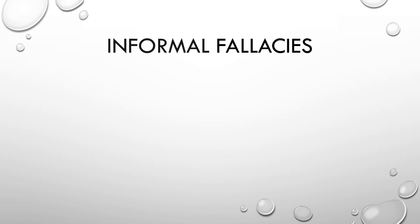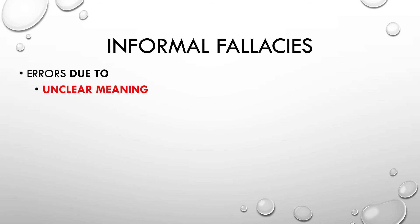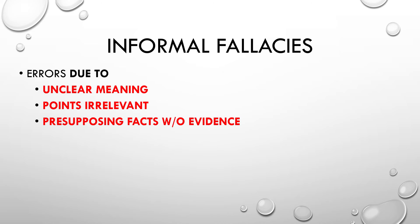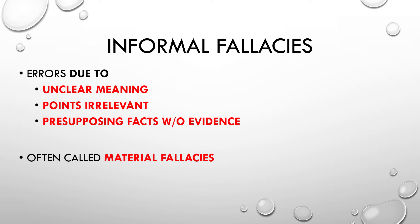What we're going to look at now is the difference with informal fallacies. Informal fallacies occur when we have errors due to things like unclear meaning — the terms in the argument are vague or ambiguous, causing linguistic confusion. It could be errors due to points of irrelevancy — points that are irrelevant to the subject of the argument. Or it could be due to presupposing facts without having any evidence. Those are the three basic categories. Informal fallacies have nothing to do with the structure or form of the argument, so we're going to call them material fallacies because they deal with the matter at hand — what's been stated, whether it's relevant, whether it's an unsupported presupposition, or whether it's ambiguous.